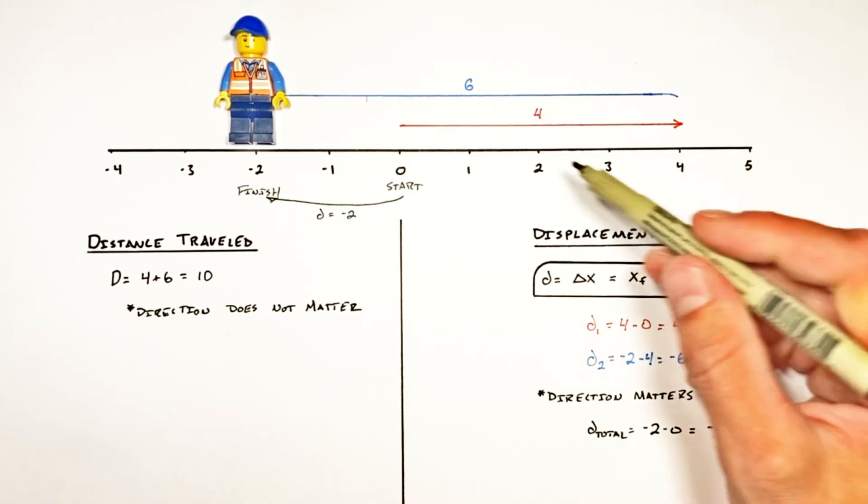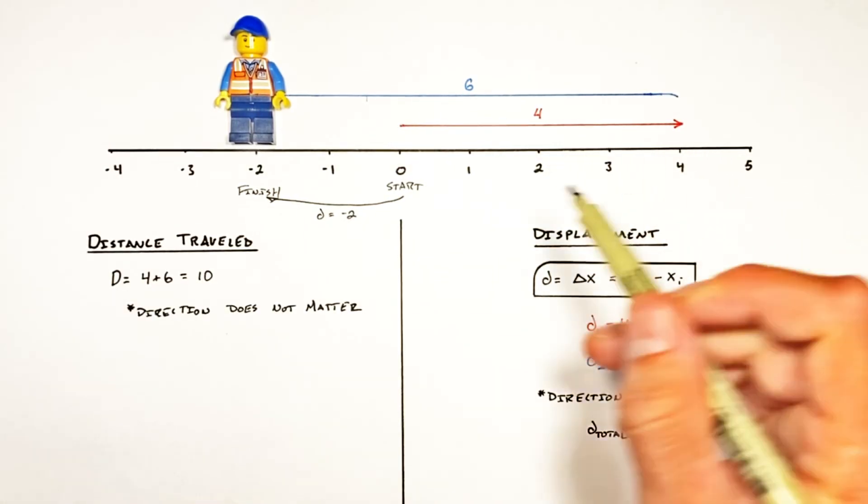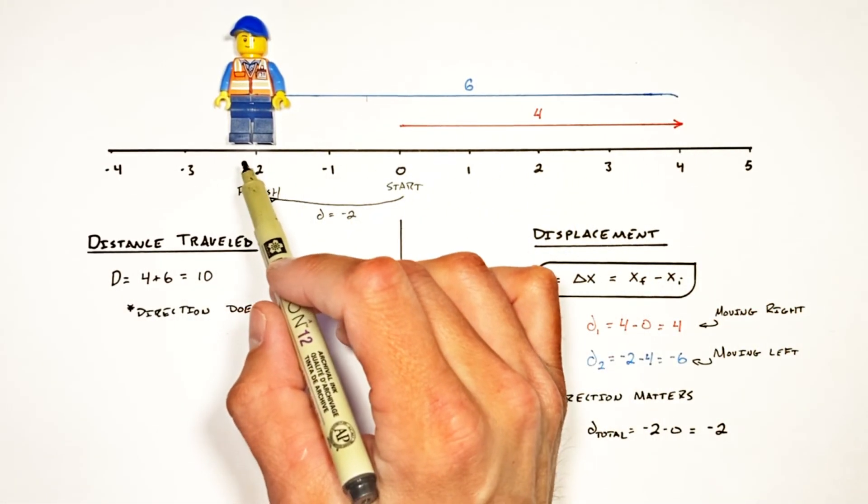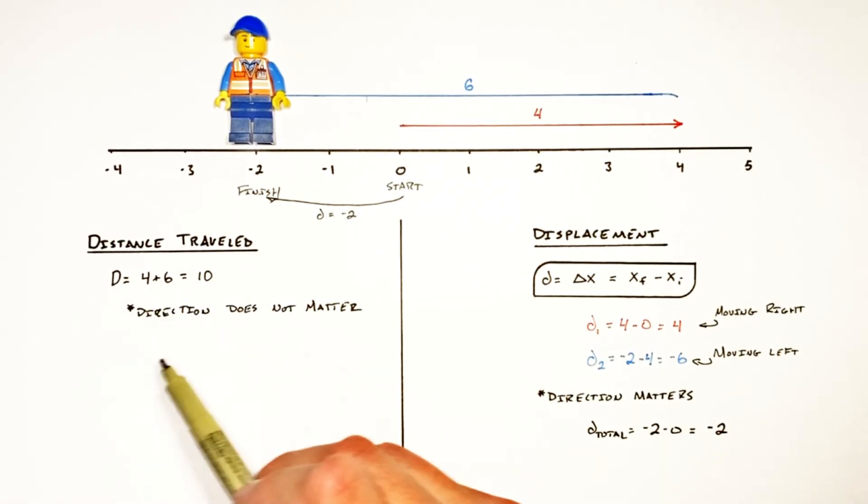This idea that displacement can be positive or negative, it can go up or it can go down, is very different from the idea of distance traveled, which is always going to increase.